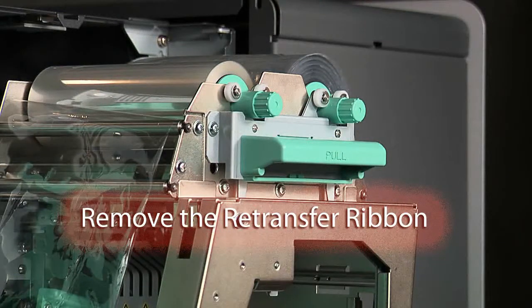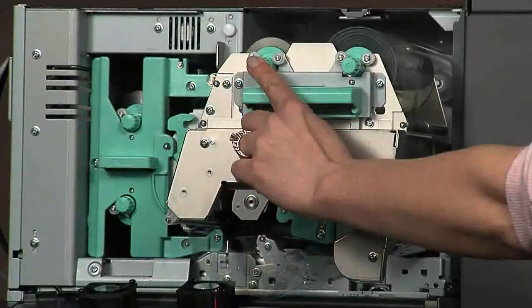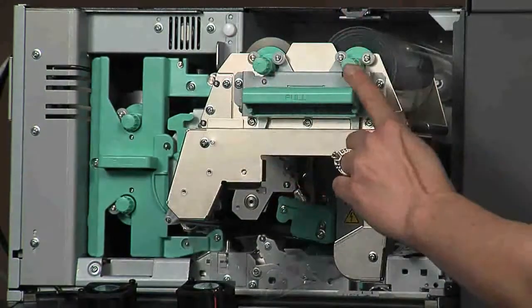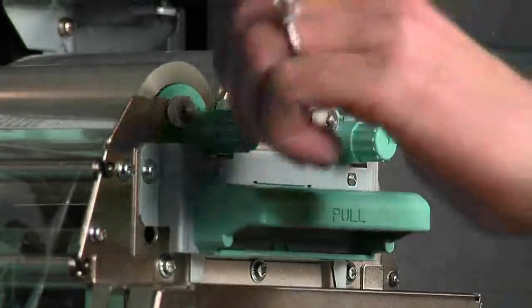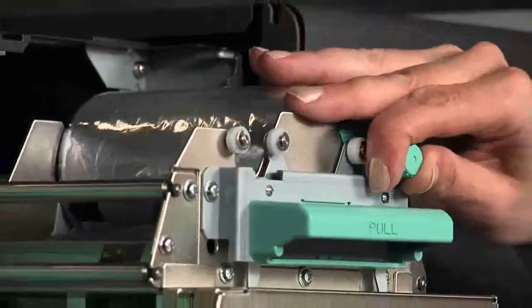Remove the retransfer ribbon from the retransfer ribbon carrier. The supply roll is on your left. The take-up roll is on your right. Pull the supply roll up and to the left. Then pull the take-up roll to the right and out.